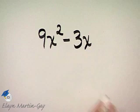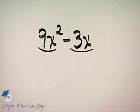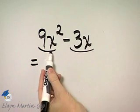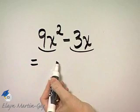If you look at these two terms, notice there is a common factor of 3x. Now if you need to, you can rewrite each term as the factor 3x times some other factor.